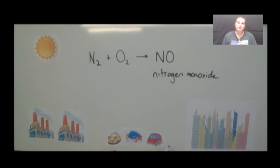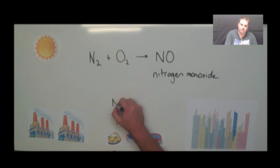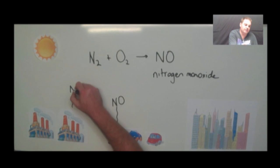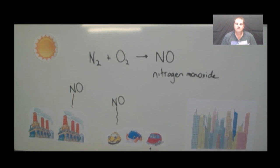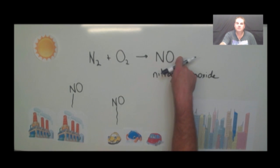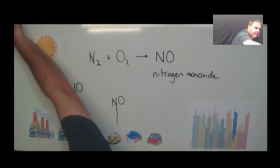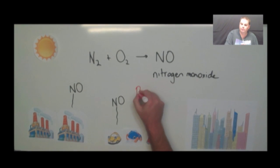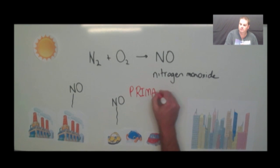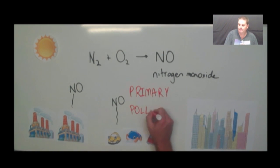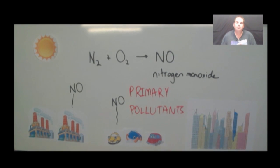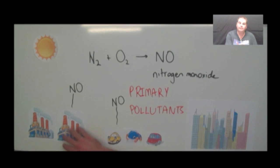So our cars and factories are giving off nitrogen monoxide. They give off other gases as well, but these are the ones we're going to be focusing on for photochemical smog. These gases, which are emitted directly into the atmosphere, are what we call primary pollutants. Primary pollutants are those that are emitted directly into the atmosphere through the burning of fossil fuels in engines or at factories — they emit nitrogen monoxide into the atmosphere.